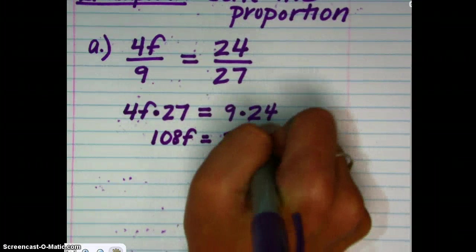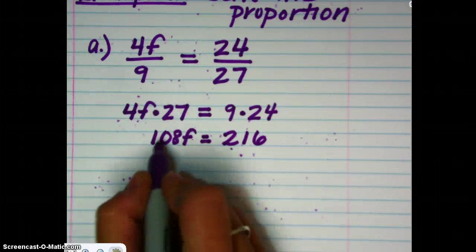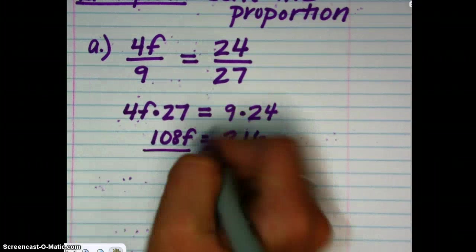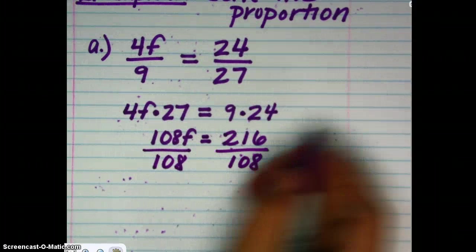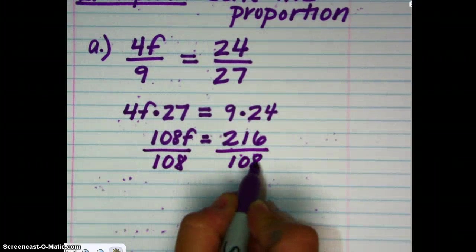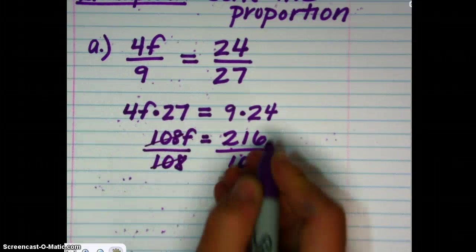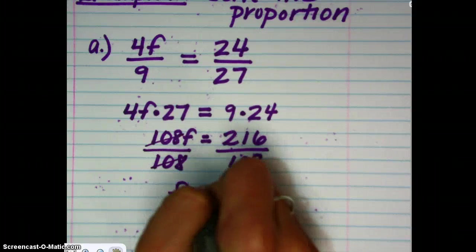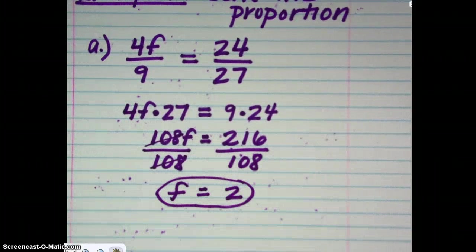So, we simplified, and now we solve for F. It's being multiplied by 108. So, we do the opposite. The inverse of multiplying by 108 is dividing by 108. Whatever we do to one side, we do to the other. Here, these cancel to 1, leaving us with 1F is equal to 2. And that would be our solution in this case.